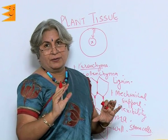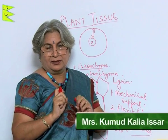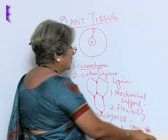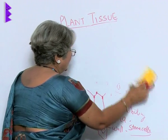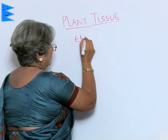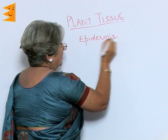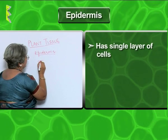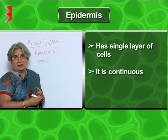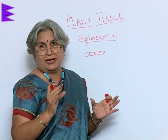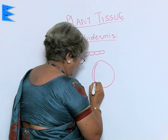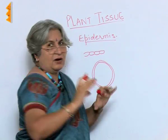What we have talked about up till now is the packing material. Now, anything you want to protect needs an outer covering, and plant tissue also requires an outer covering — that outer covering is provided by the epidermis. Epidermis is a single continuous layer of cells which surrounds the inner cells, protecting them from mechanical injury.